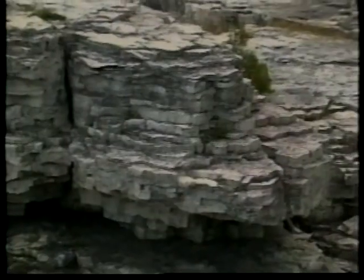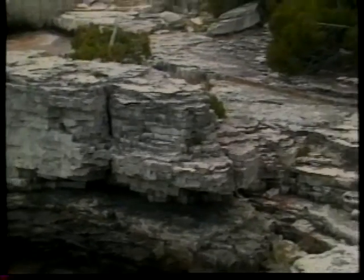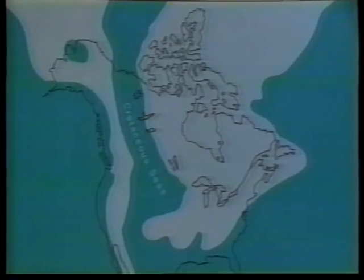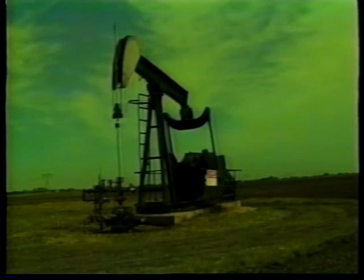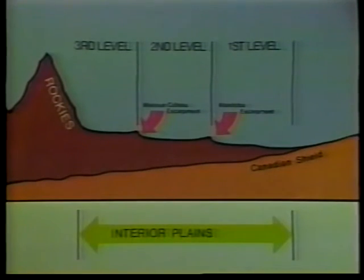The interior plains are part of the great plains of North America, which extend from the Arctic Ocean to the Gulf of Mexico. There is sedimentary rock beneath the surface which formed long ago when oceans covered the area. Potash, oil, and gas are found in this underlying sedimentary rock. The interior plains have an overall downward slope from west to east, and the landscape is flat or rounded and gently rolling.